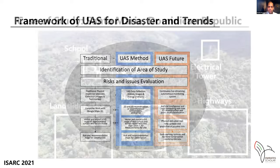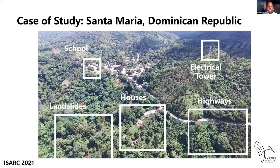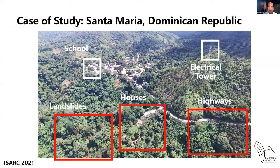For this case study, there was a landslide problem when the community started to feel earth movements. The landslide happened in the south area where there was not a large population. Only three houses were affected and the highway was damaged. Two other pieces of infrastructure later presented risk and vulnerability for the community: the electrical grid and a school.